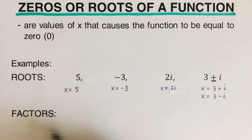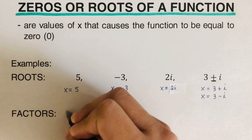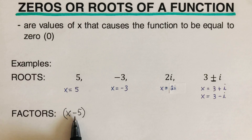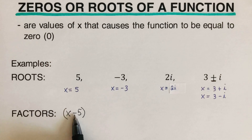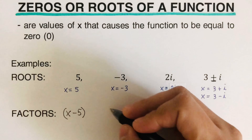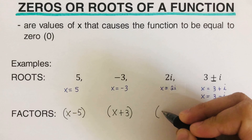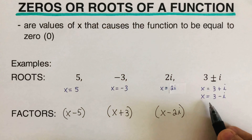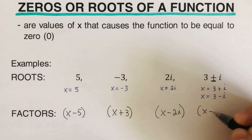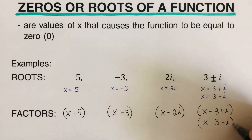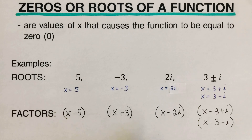If we want to change these roots into factored form, we use the zero product property backwards. We rewrite x = 5 as (x - 5), because if we set that equal to zero and add five to both sides, we get x = 5. So we switch the sign. The root x = -3 becomes (x + 3), x = 2i becomes (x - 2i), and x = 3+i becomes (x - 3 - i), with the other being (x - 3 + i).